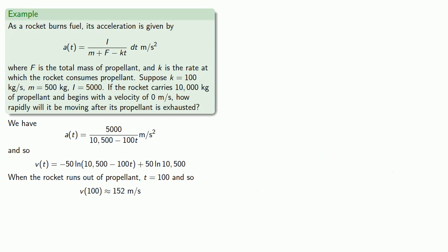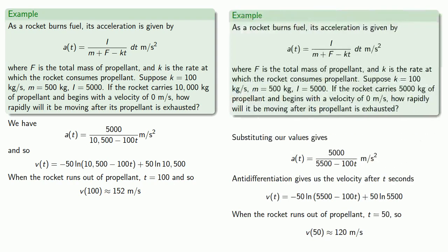And that's a rather disappointing result. Because when we had 5000 kilograms of propellant, we got to 120 meters per second. Doubling the amount of propellant didn't give us a very large change in our final velocity. And this leads to what might be called the rocket problem.